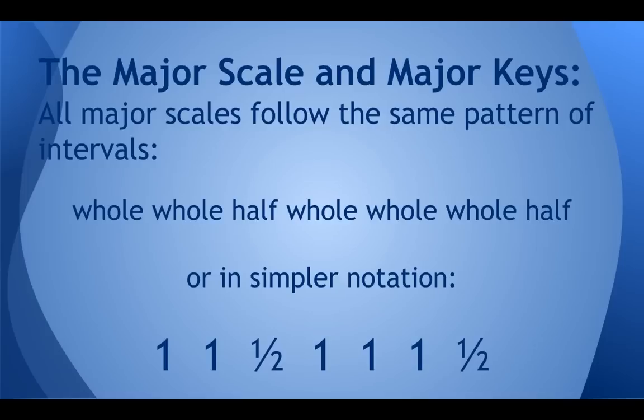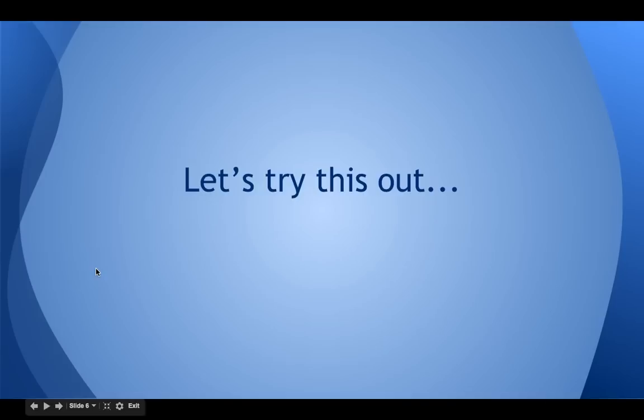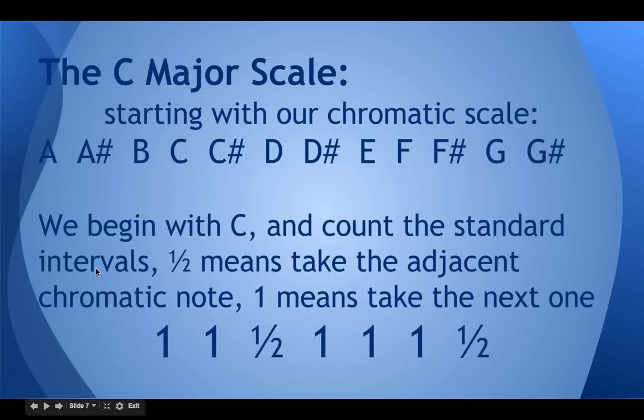All major scales and all major keys follow the exact same pattern of intervals. You heard what a half step sounds like, and a whole step is just simply two of these, because two halves make a whole. So if you go up in the pattern whole, whole, half, whole, whole, whole, half, that'll get you a major scale in whatever key you start on, whatever note you start on in a chromatic scale.